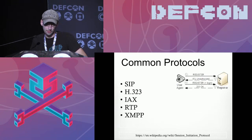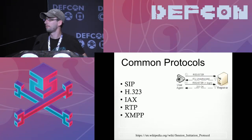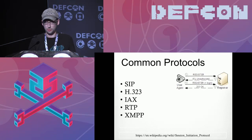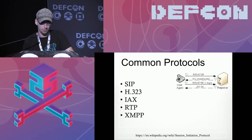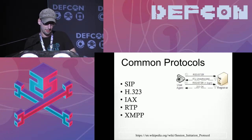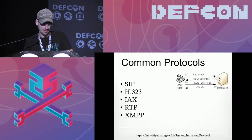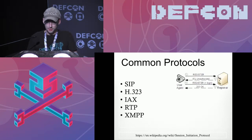Your common VoIP protocols: Session Initiation Protocol — SIP — is very similar to HTTP; it's a text protocol where you send a request and get a response, used to initiate a media session. The media stream itself is RTP — the Real-Time Protocol. Then you have H.323, which is a competitor to SIP. IAX was created by the creator of Asterisk to address some problems with SIP but never really took off. And XMPP — Extensible Messaging and Presence Protocol — is another one. They all facilitate phone calls.